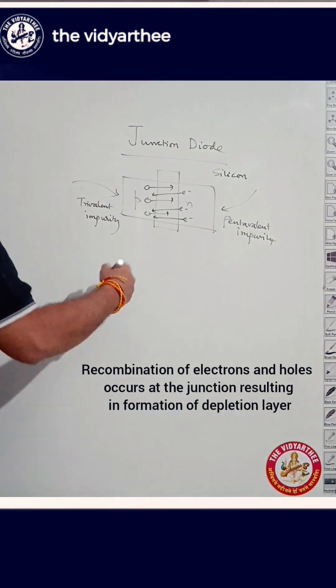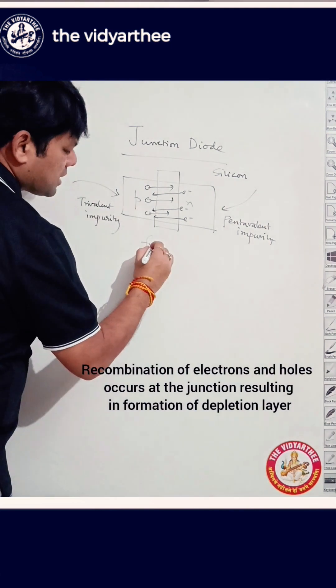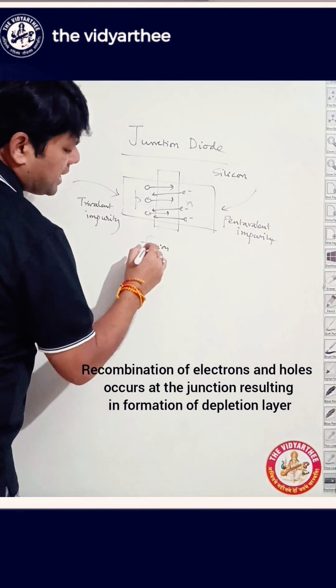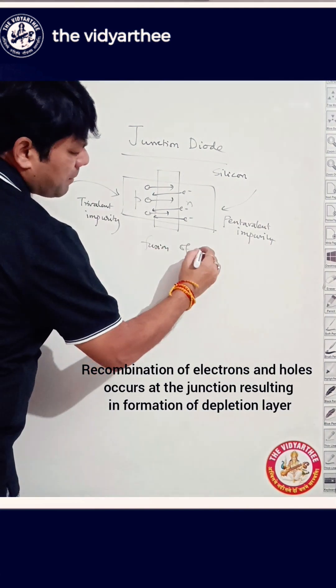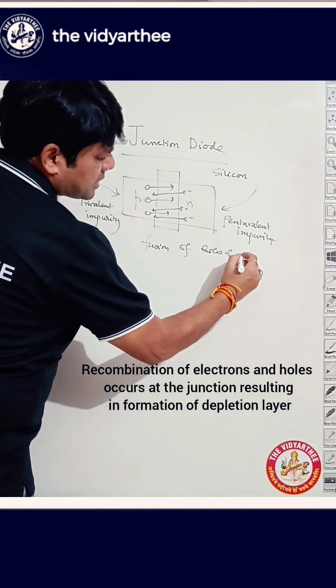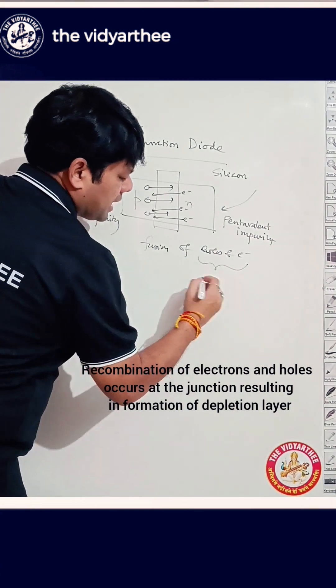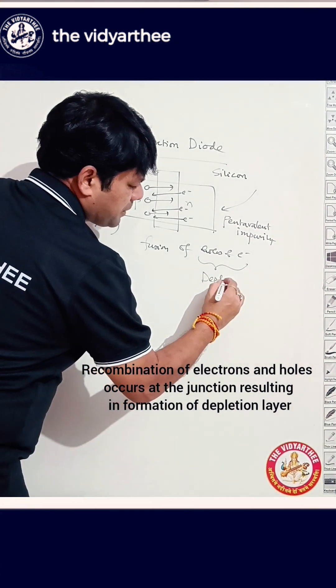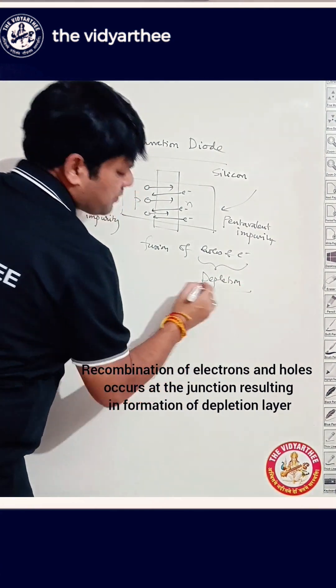During this movement, there will be diffusion which occurs — diffusion of holes and electrons. Now, that leads to the formation of a depletion layer. We will take the depletion layer in the next topic. Thank you very much.